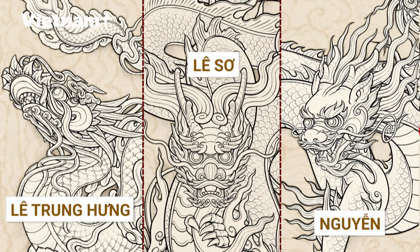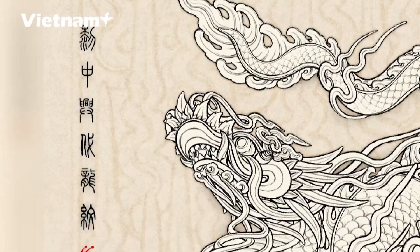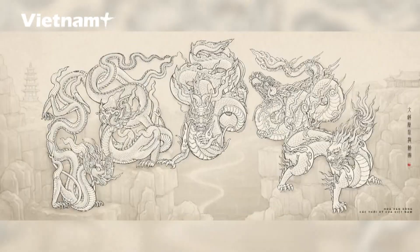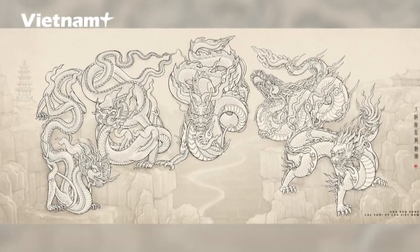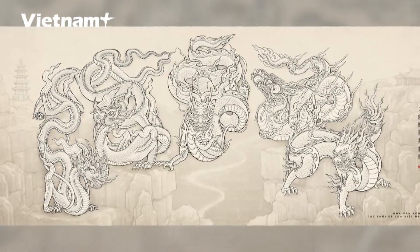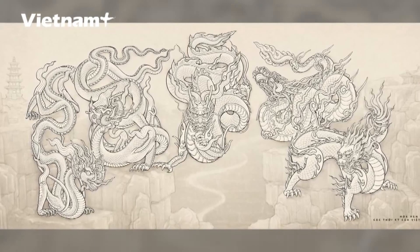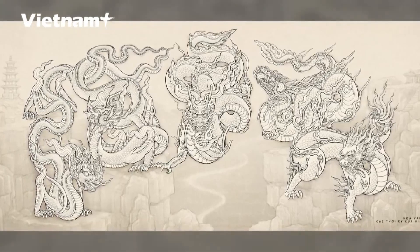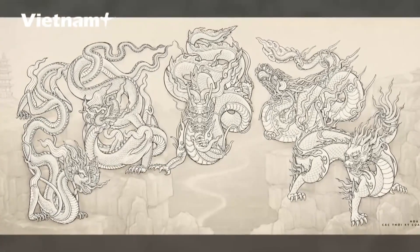In summary, from the Li and Tran to the Le and Nguyen periods, Vietnamese dragons underwent continuous evolution, reflecting a harmonious blend of indigenous cultural elements and regional influences, creating an iconic symbol that is both majestic and accessible.